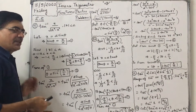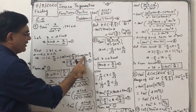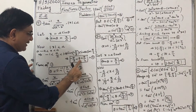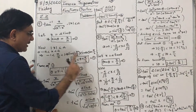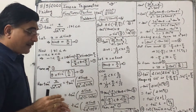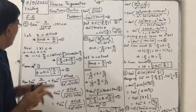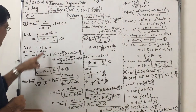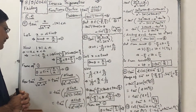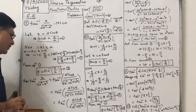Minus 1 can be written as sin(−π/2), x/a is our sin θ, and 1 can be written as sin(π/2). Since sine is an increasing function, this inequality remains the same. So here: minus π/2 less than θ less than π/2. Thus θ is in the range of sin⁻¹, so I can write θ = sin⁻¹(x/a). Let that be equation 3.